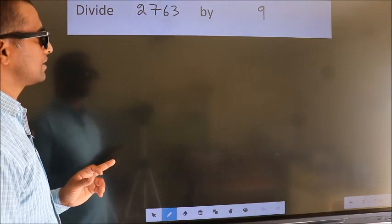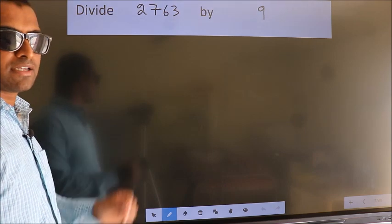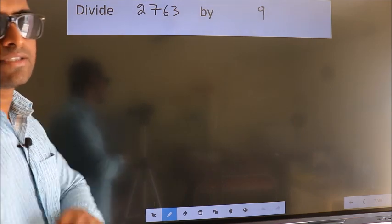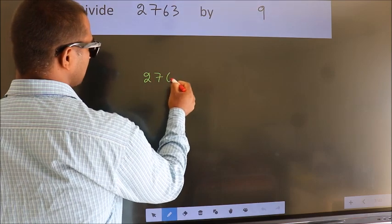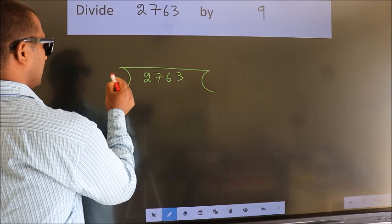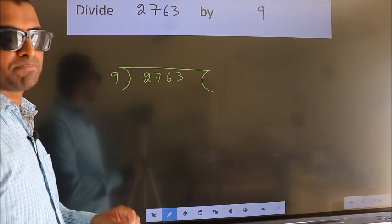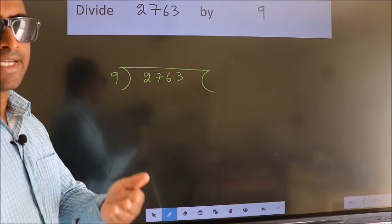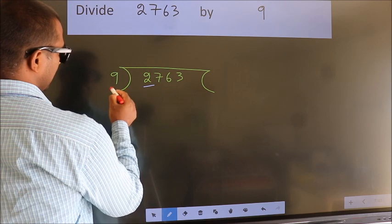Divide 2763 by 9. To do this division, we should frame it in this way: 2763 here, 9 here. This is your step 1. Next, here we have 2 here, 9.